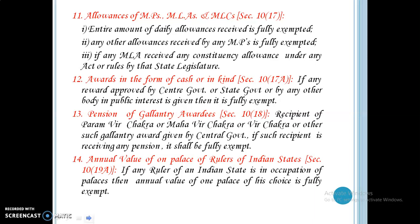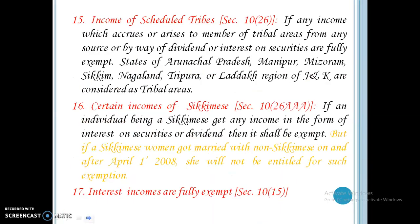Annual value of one palace of rulers of Indian states — if any ruler of an Indian state is in occupation of palaces, then the annual value of one palace of his choice is fully exempt. Incomes of scheduled tribes — if any income which accrues or arises to a member of a tribal area from any source, or by way of dividend or interest on securities, it is fully exempt. The states of Arunachal Pradesh, Manipur, Mizoram, Sikkim, Nagaland, Tripura, and the Ladakh region of Jammu and Kashmir are considered as tribal areas. Certain incomes of Sikkimese — if an individual being a Sikkimese gets any income in the form of interest on securities or dividend, it shall be exempt. But if a Sikkimese woman got married with a non-Sikkimese on or after April 1, 2008, she will not be entitled for such exemption.